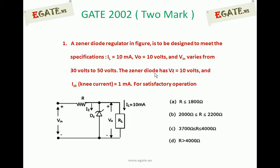The question is related to zener diode voltage regulator. This is a circuit diagram, a simple voltage regulator using zener diode. A zener diode regulator in the figure is to be designed to meet the specifications: IL load current of 10mA, V0 output voltage of 10V, and Vin input varying from 30V to 50V.